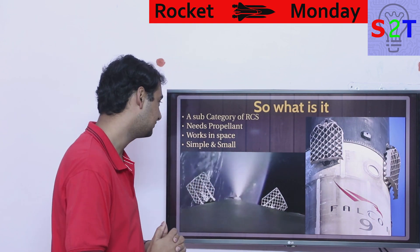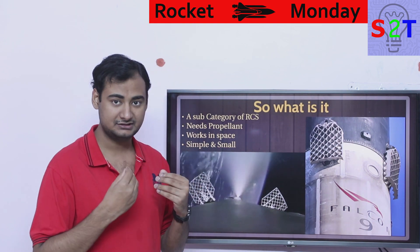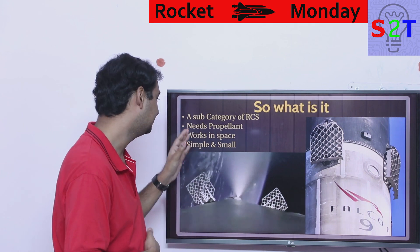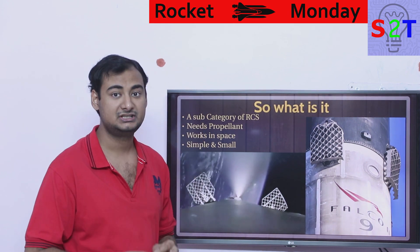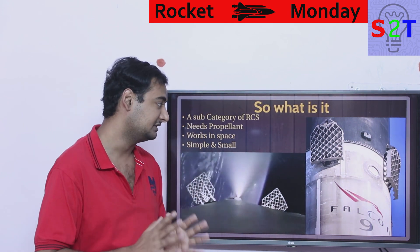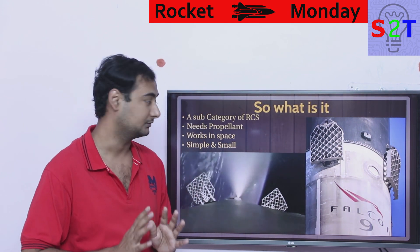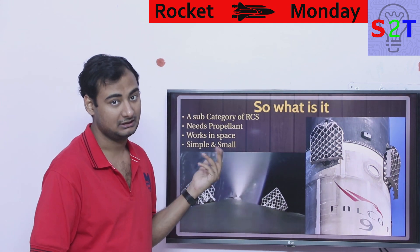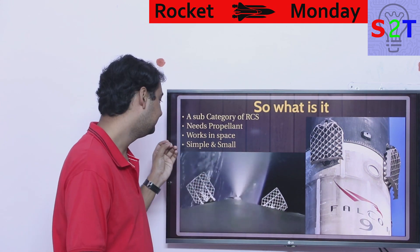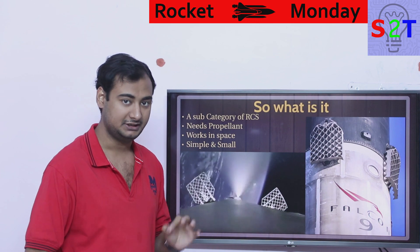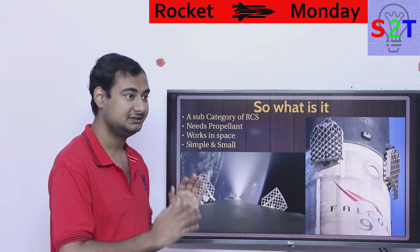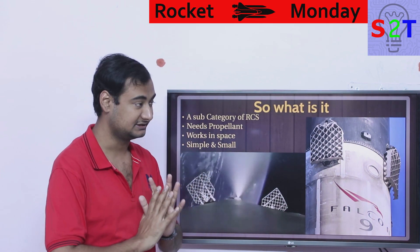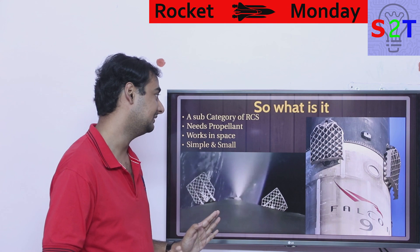It has the same limitations as a normal reaction control system — it also needs propellant; if you don't have propellant it's not going to work. It works in space, and it is very small and simple in terms of complexity. This is the simplest rocket you can make — the simplest system out there.